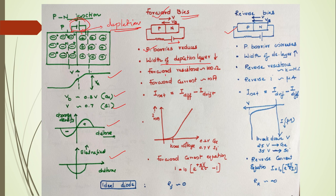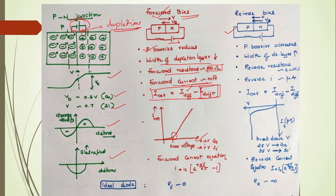In forward bias, the resistance offered is just a few to hundred ohms, and the current is of the order of milliamperes. The net current I equals diffusion current due to majority carriers minus drift current due to minority carriers. In the I-V characteristic, up to about 0.2 V for germanium and 0.7 V for silicon there is no appreciable current flow; after that the current increases abruptly and it behaves as a conductor.